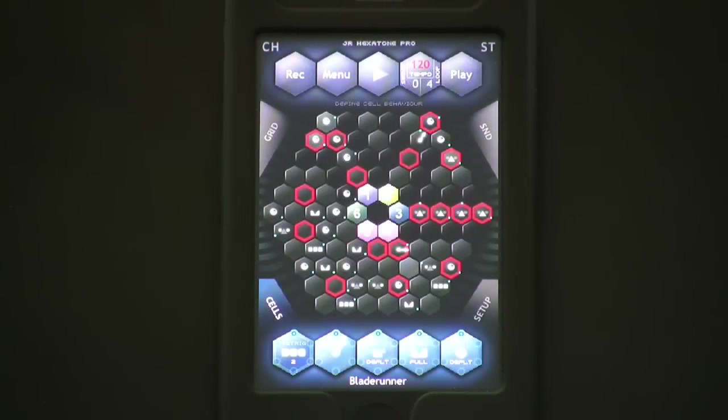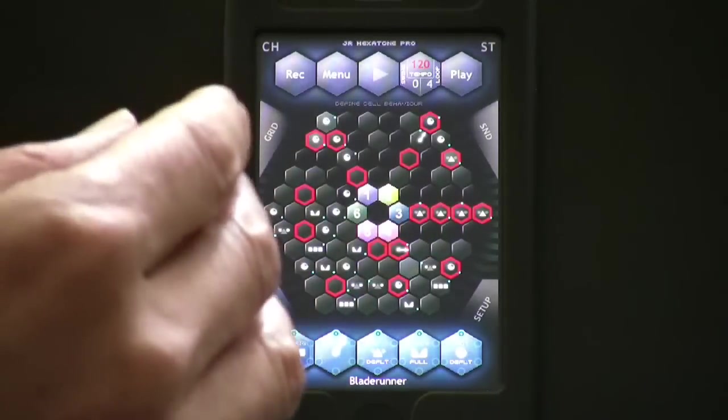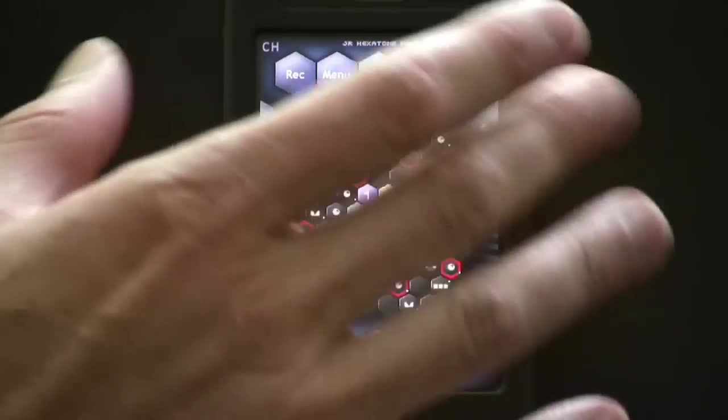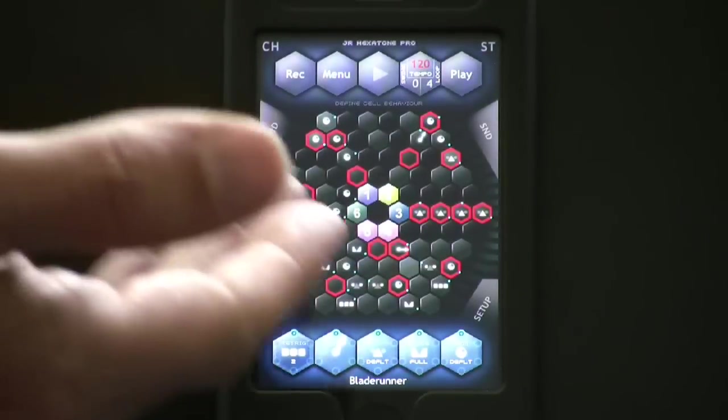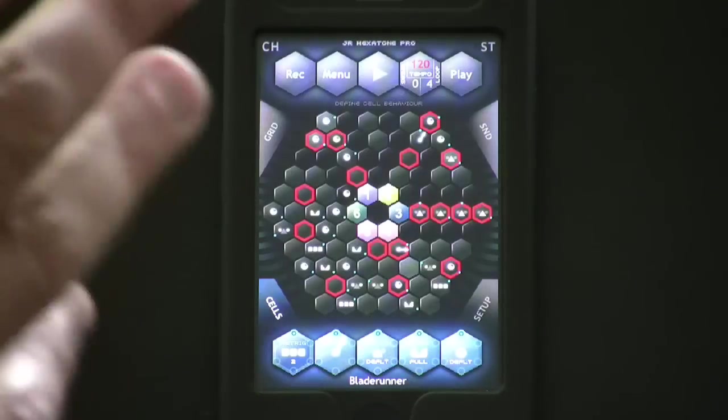Hexitone is the world's first six-directional rhythm sequencer. It's awesome that you have these six oscillators, and each oscillator can travel on its own path through the hexagon. While it's traveling through the path, it can pick up all these very unique modifiers, which we'll see in a little bit.